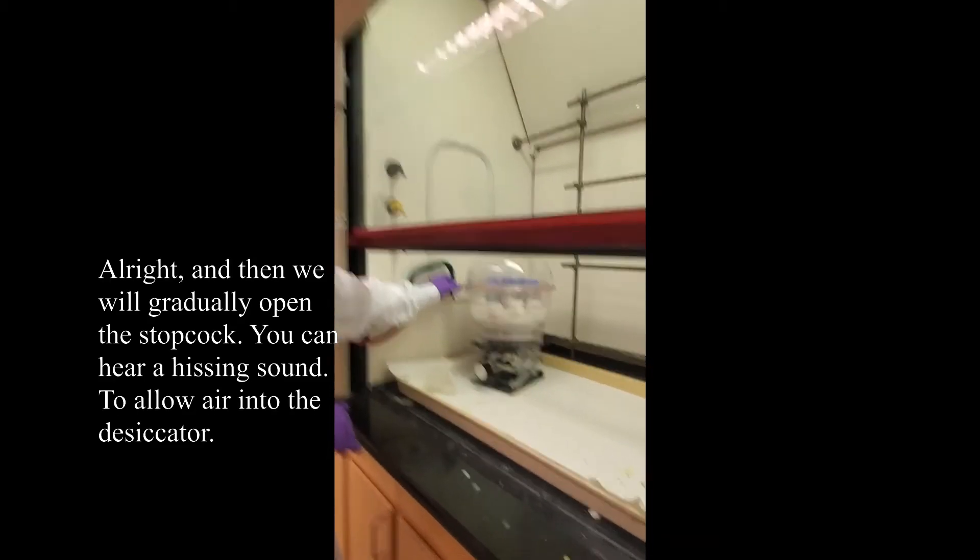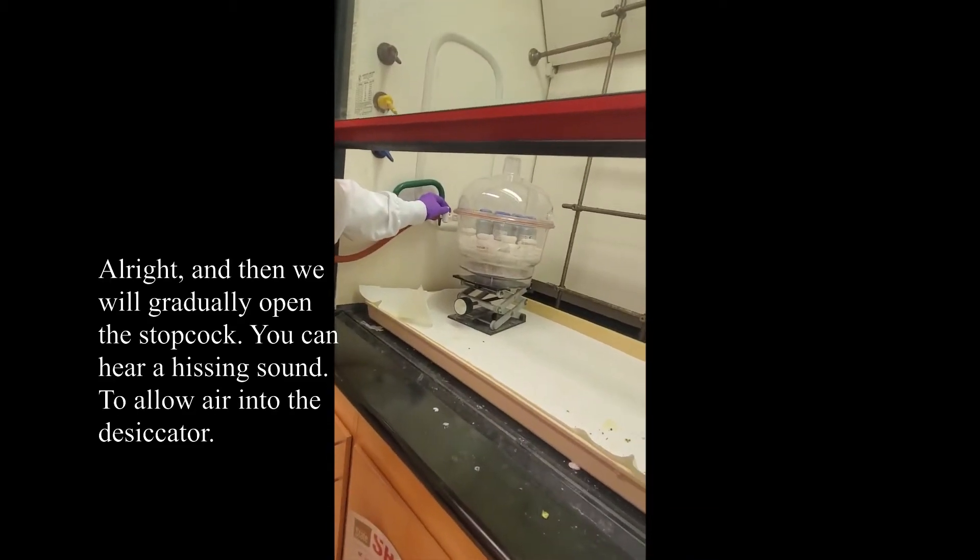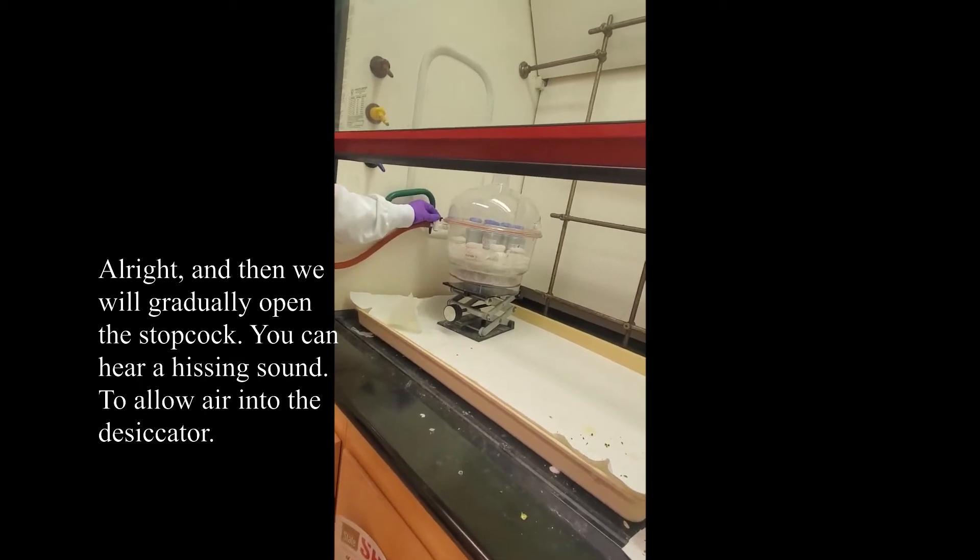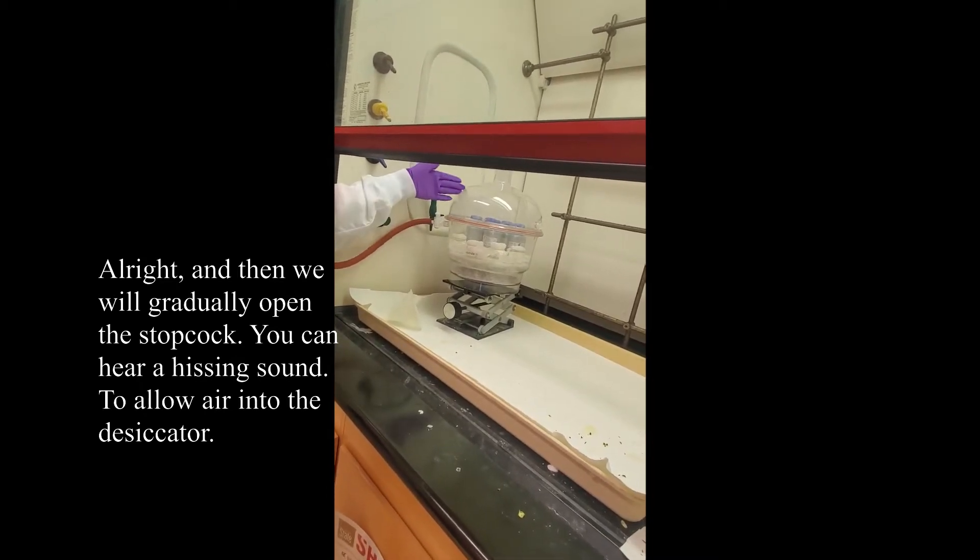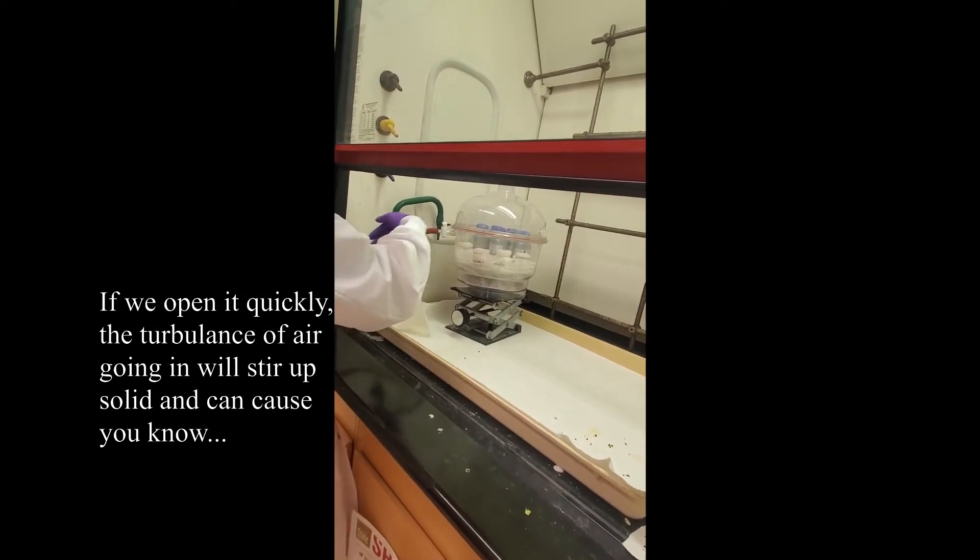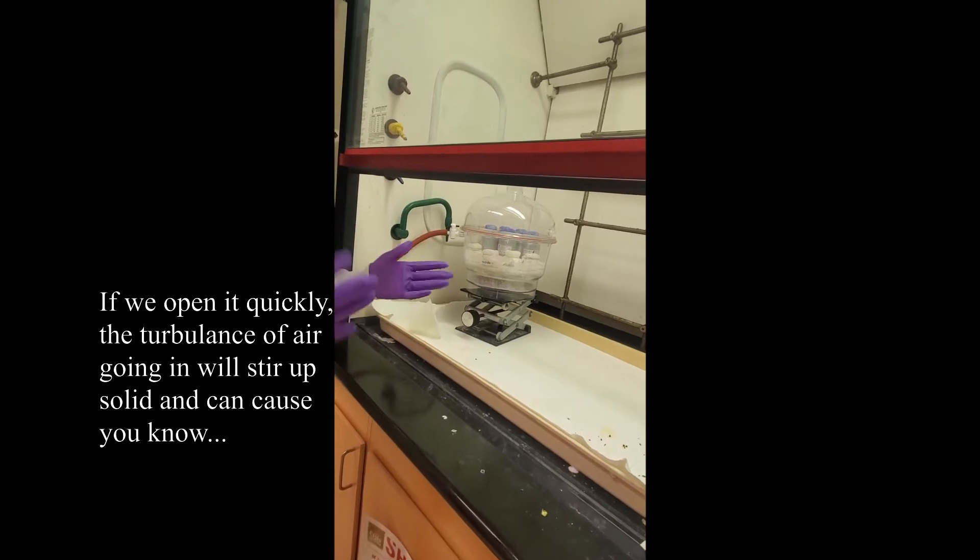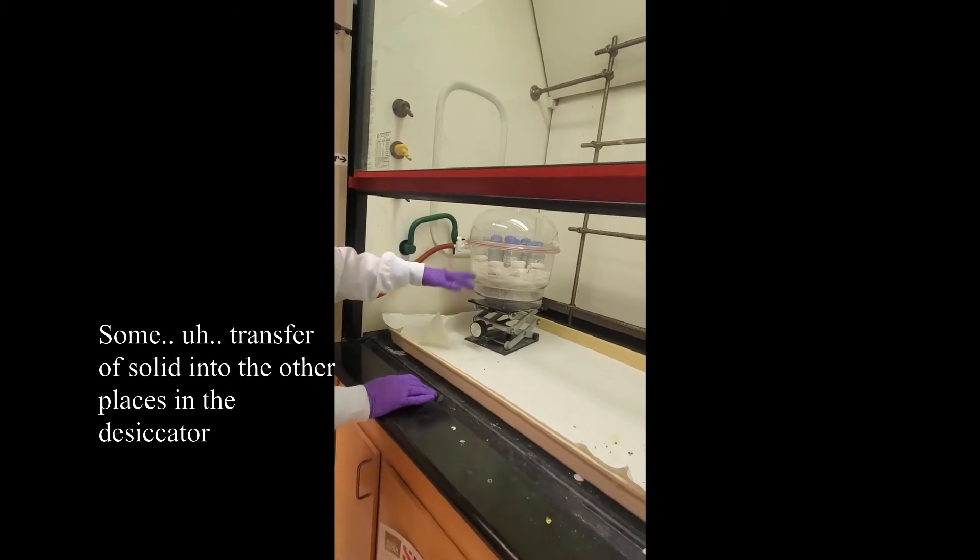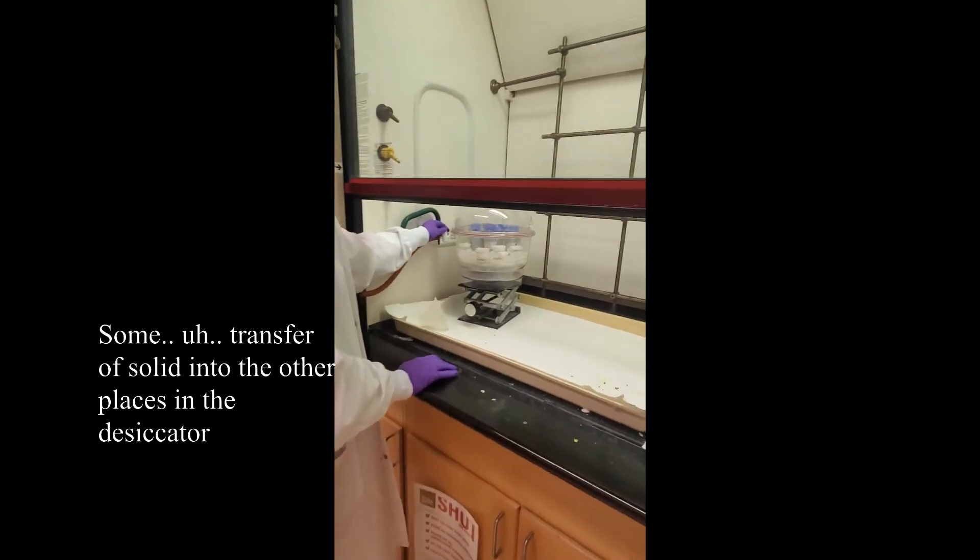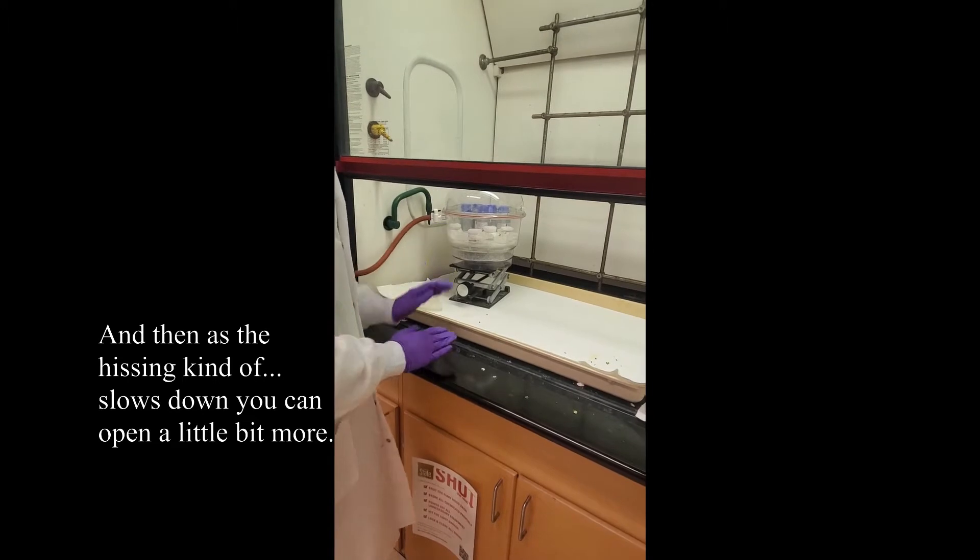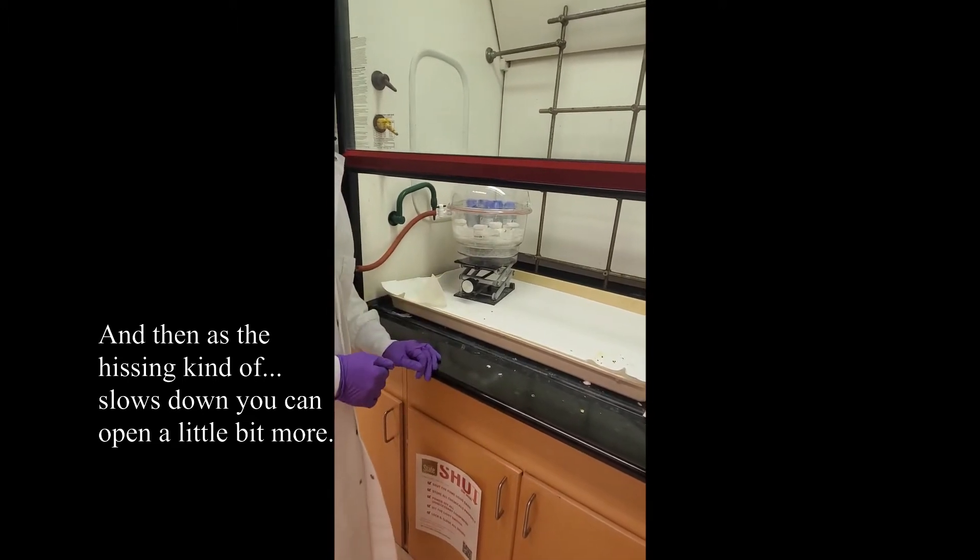And then lastly, we will gradually open the stopcock. You can hear a hissing sound to allow air into the desiccator. If we open it quickly, the turbulence of the air going in will stir up solid and could cause transfer of solid into other places of the desiccator. And then as the hissing kind of slows down, you can open a little bit more.